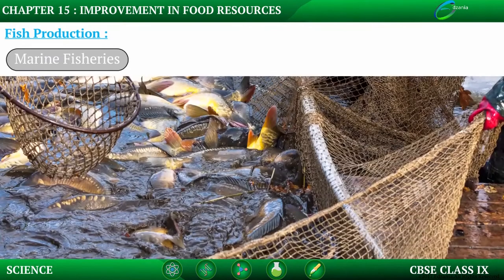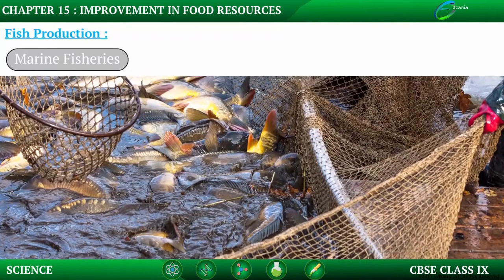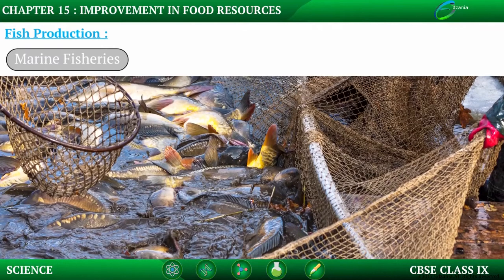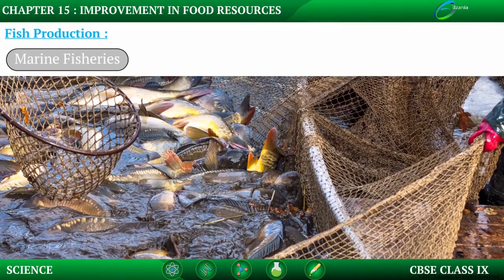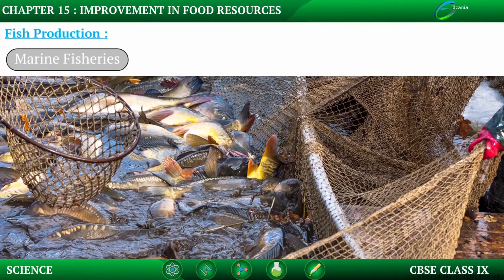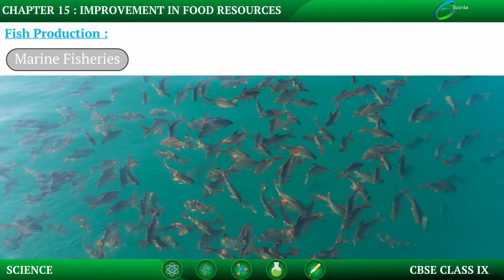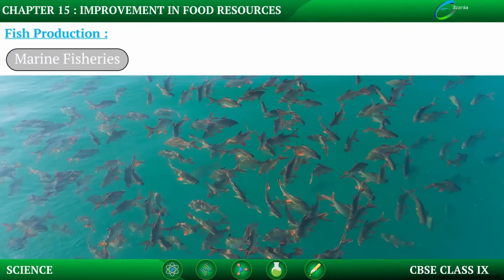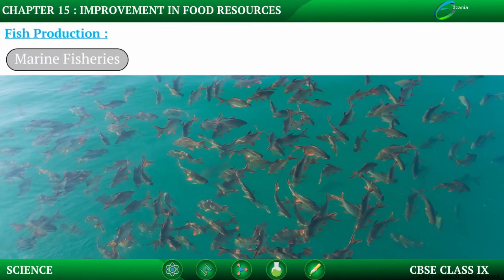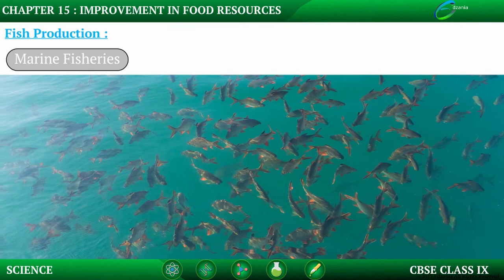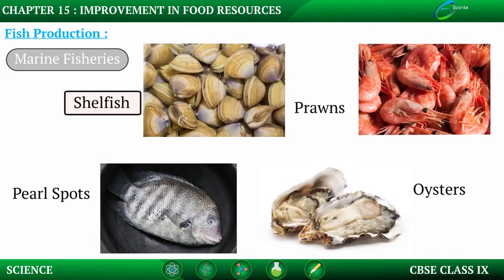Harvesting of fishes from seawater occurs by using many kinds of fishing nets. Due to high economic value, some marine fish are also farmed in seawater. This includes shellfish, prawns, pearl spot, and oyster.